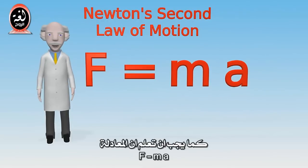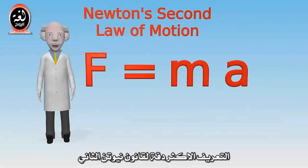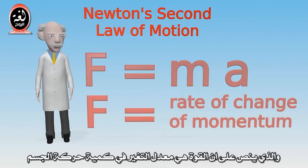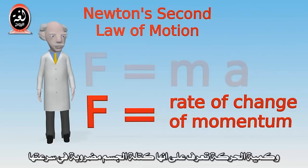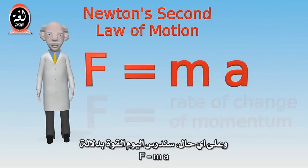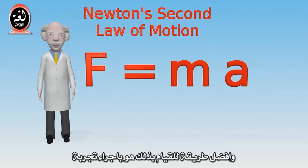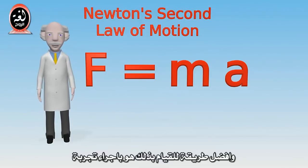You should note that F equals MA is in fact derived from the more exact definition of the second law, which is that the force equals the rate of change of momentum of the object, where momentum is defined as the object's mass times its velocity. However, today we'll study the law in the form F equals MA, and the best way for us to do that is to do an experiment.